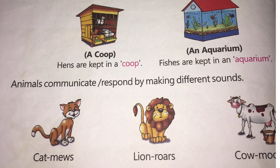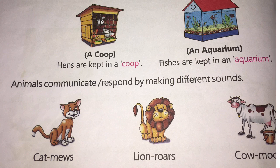Animals communicate or respond by making different sounds. Cat says meow, lion roars, and cow moos. Just like we talk, all these animals also communicate but in different sounds. We all know a cat says meow, a lion roars, and a cow says moo.